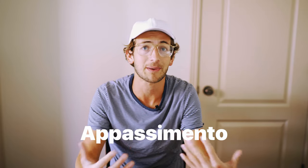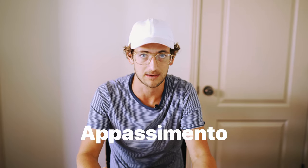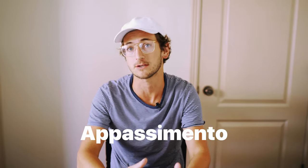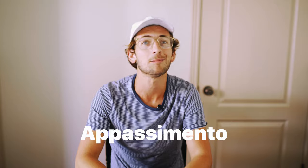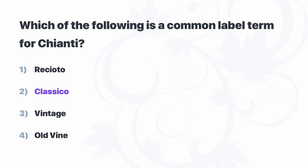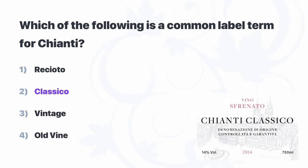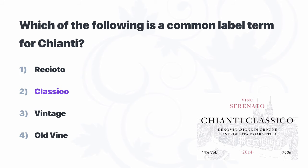Ricciotto appears on the label of sweet wines made with the appassimento method of drying grapes out to concentrate their sugars. But this term is more common for Soave and Valpolicella, not Chianti. The term Classico, which indicates that a wine was made within its original boundaries rather than its updated or expanded boundaries, is our answer.